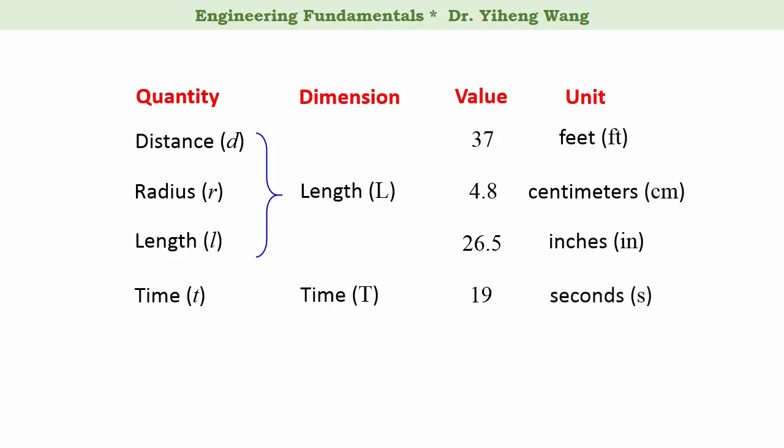Another quantity we are familiar with is volume, represented by the symbol capital italic V. Volume is not a base quantity; therefore its dimension is not volume itself. Since volume is the measurement of three-dimensional space, the dimension for volume is length raised to the third power. There are also many common units for volume — for example, cubic meter, liter, milliliter, gallon, or even cup. A soda can has a volume of about 355 milliliters.